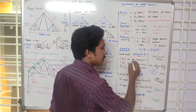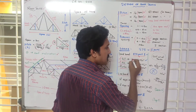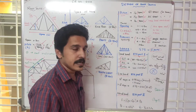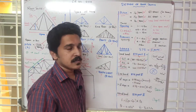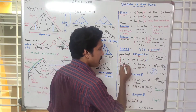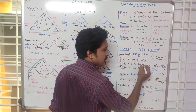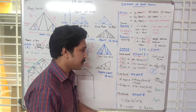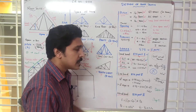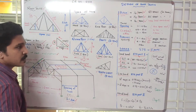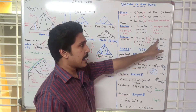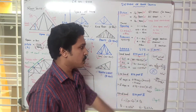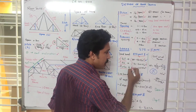For dead loads, we refer to IS 875 Part 1. The roofing sheet weight is approximately 170 to 200 N/m² for asbestos cement sheet. The purlin section — whether angle or channel — is also included in the dead load calculation.